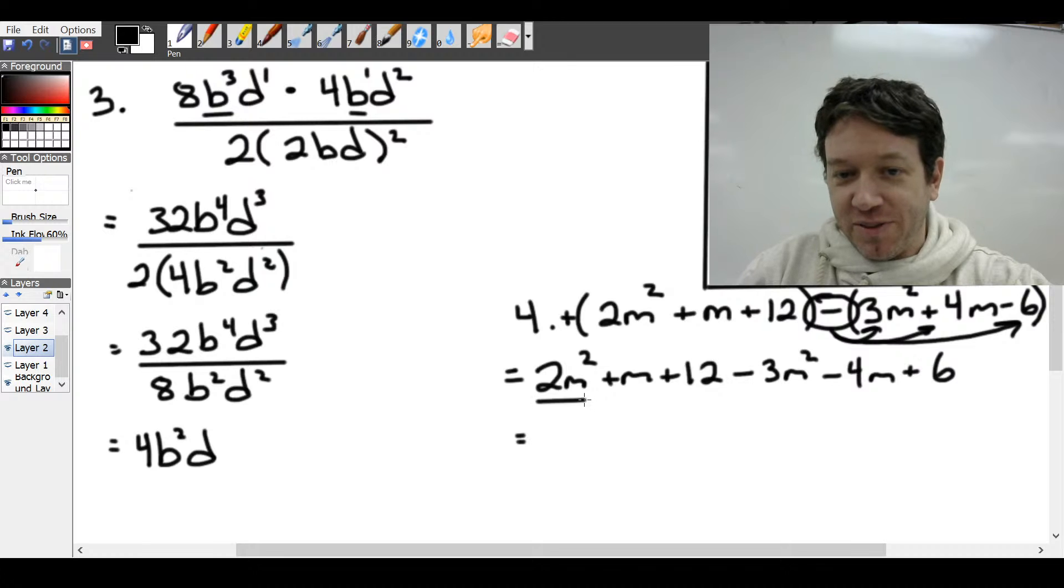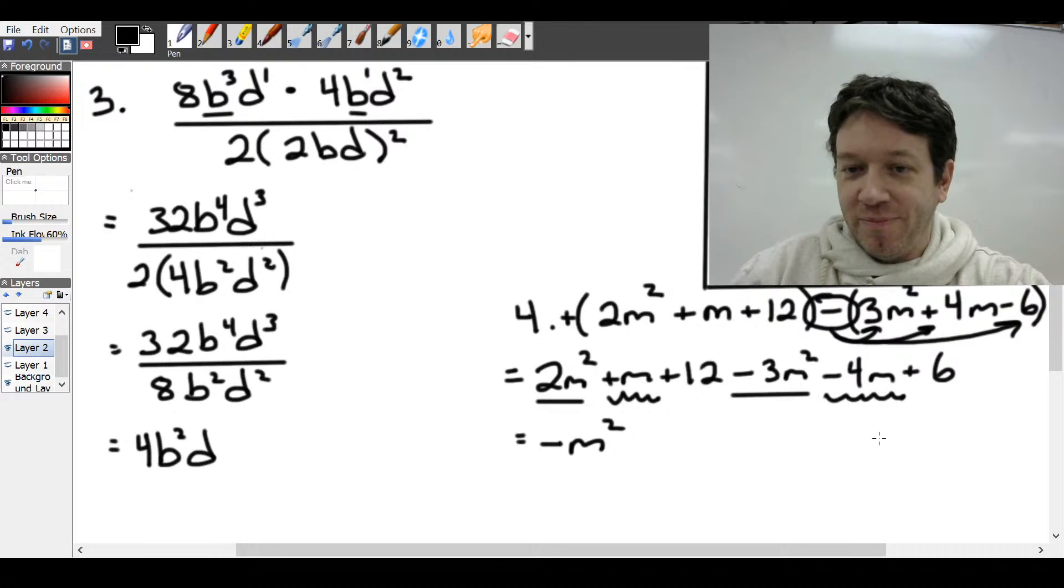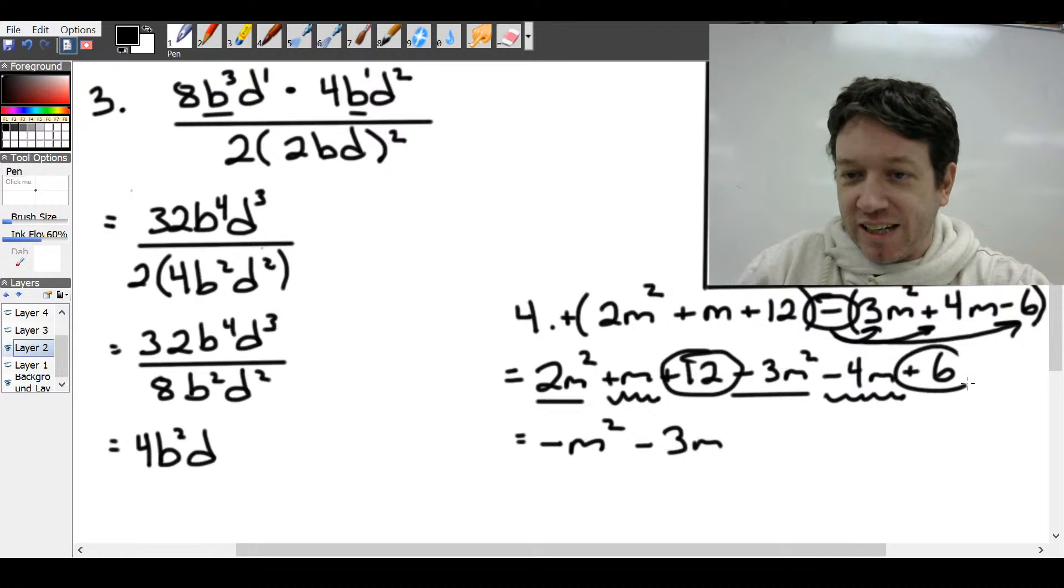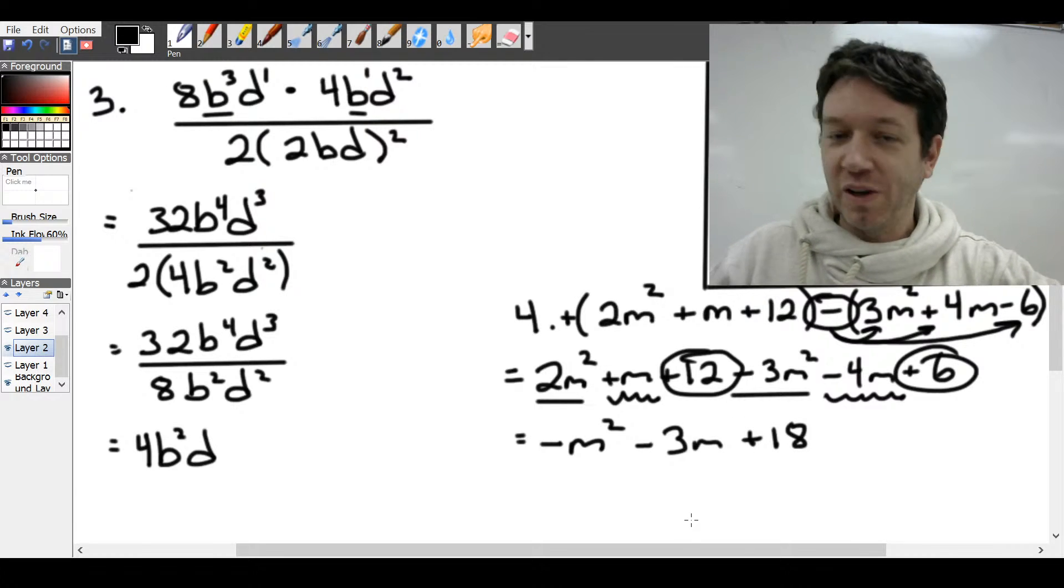So we have 2m squared plus m plus 12 and then minus 3m squared minus 4m. And then that negative 6 becomes positive 6 because we have a double negative. Now we just collect like terms. So we have an m squared and an m squared. So 2 minus 3 is negative 1. And then over here we have m and minus 4m. So that's minus 3m. And then finally we have a 12 and a 6. So plus 18.